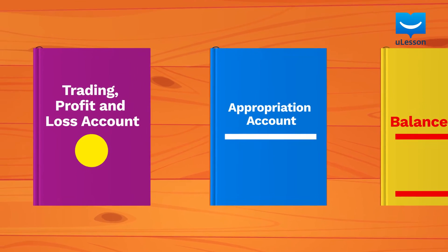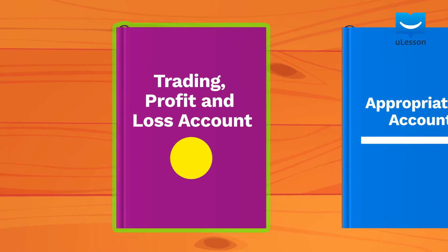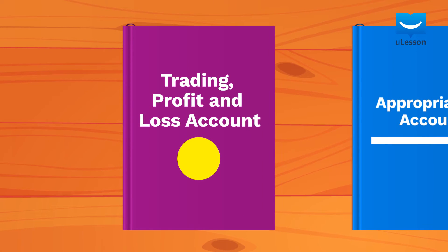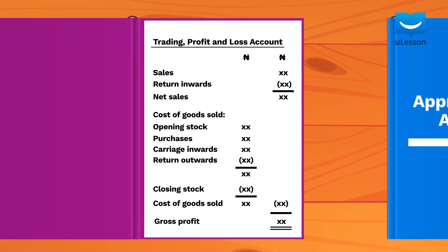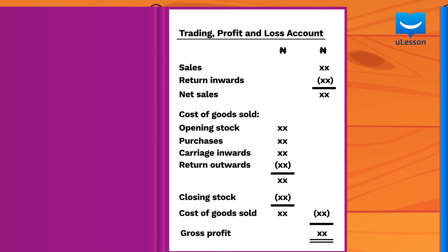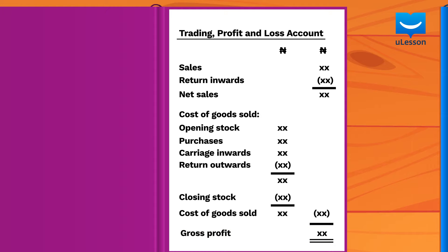In this lesson, we will see how the trading profit and loss account is prepared. The trading profit and loss account shows the sales made by a company and the profit at the end of each year. Let's look at the format for a company's trading profit and loss account. From the sales, the cost of goods sold is deducted to get the gross profit, after which all expenses incurred during the year would be deducted to obtain the net profit or loss. Let's see how this format is used in Cairo PLC.